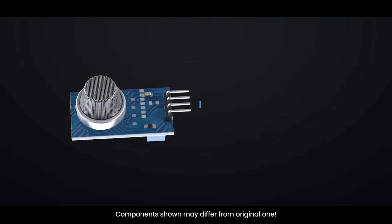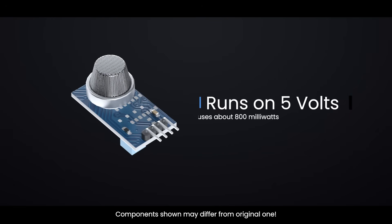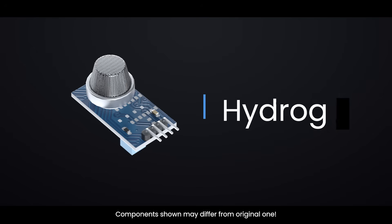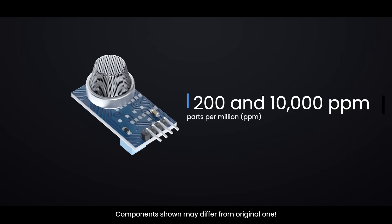The MQ2 gas sensor runs on 5 volts of DC power and uses about 800 milliwatts of energy. It can detect several types of gases including LPG, liquefied petroleum gas, smoke, alcohol, propane, hydrogen, methane, and carbon monoxide. This sensor can detect these gases when their concentrations are between 200 and 10,000 parts per million ppm.